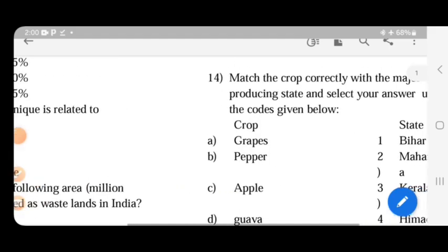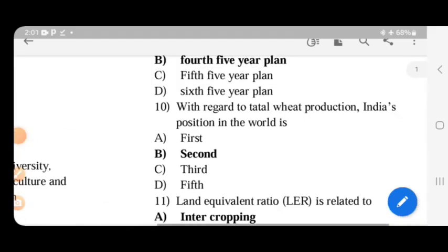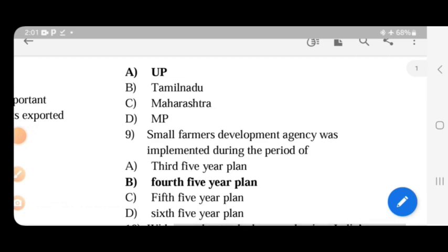Sugar cane productivity is highest in Uttar Pradesh. Next.